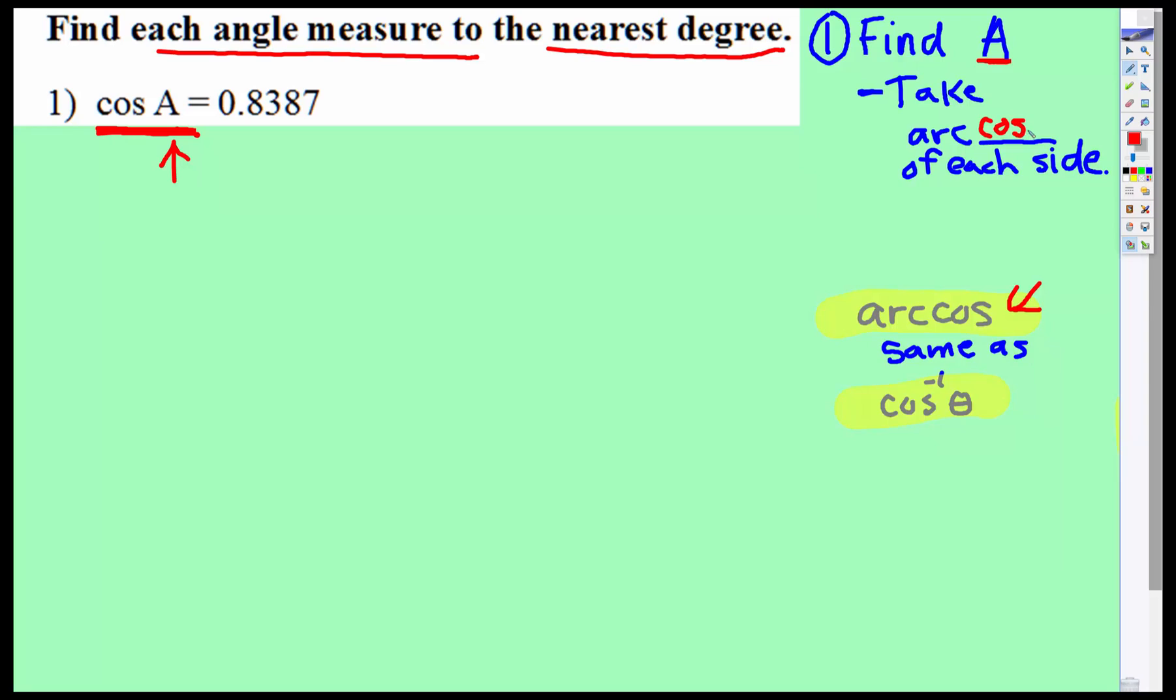You're going to be taking the arc cosine of each side. This is what that would look like: cosine⁻¹ of cosine A equals cosine⁻¹ of 0.8387.